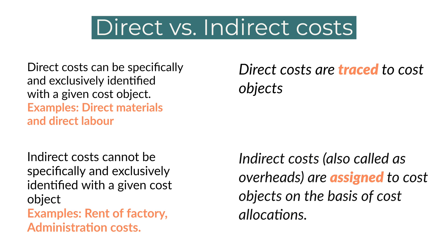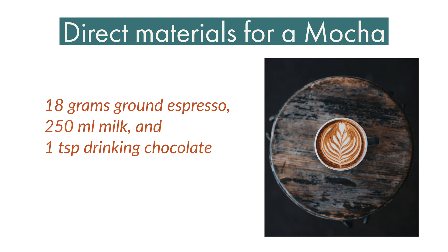Let us talk about direct versus indirect costs. Direct costs are those costs that can be specifically and exclusively identified with a cost object. If Candy would like to calculate the cost of making a mocha, she would look at, for instance, the cost of coffee beans or ground espresso. She can specifically and exclusively identify that making each medium-sized mocha requires exactly 18 grams of ground espresso — not more, not less. Hence, ground espresso is an example of a direct materials cost for a mocha.